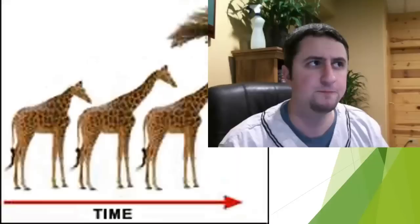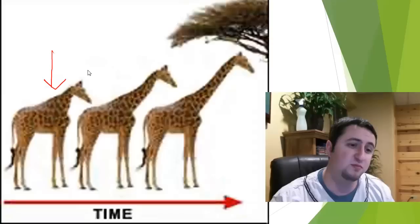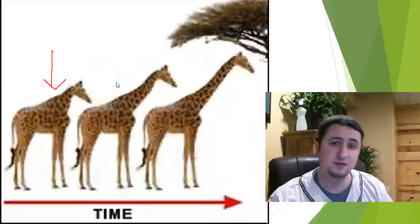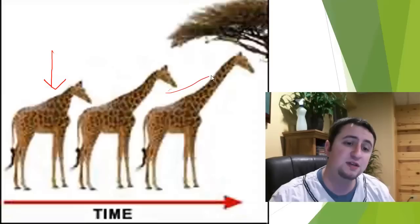So looking at the giraffes again — according to Lamarck, there was a giraffe born with a short stubby neck, and through the course of its lifetime, roughly 20 to 30 years, the giraffe stretched out its neck as far as it could. Eventually by the end of its life it had a much longer neck. Hopefully you can see why that is totally not a correct theory.